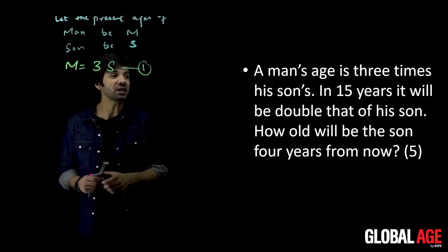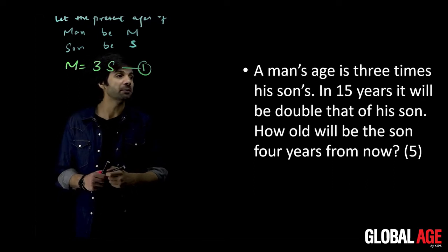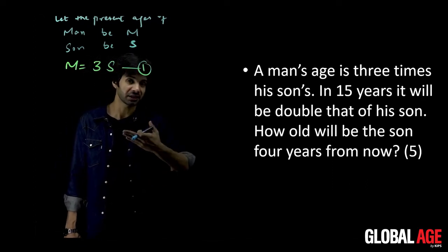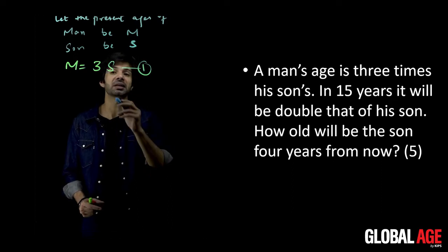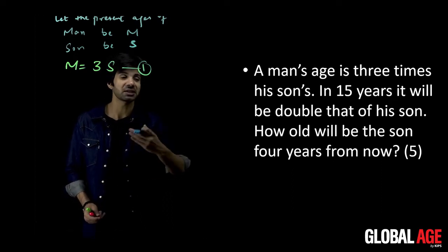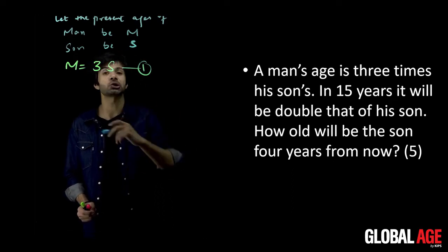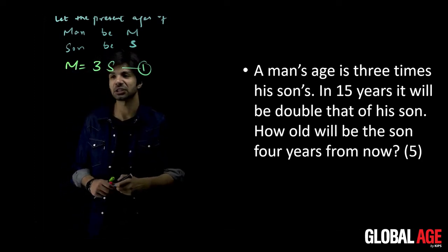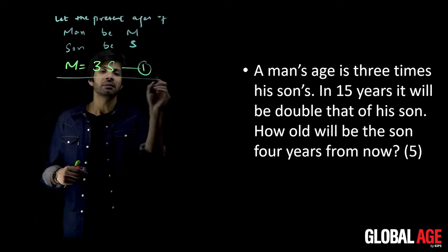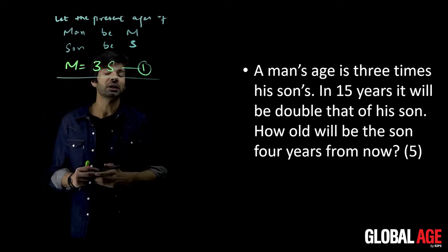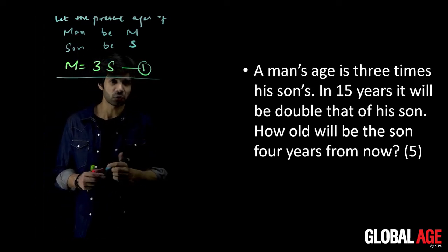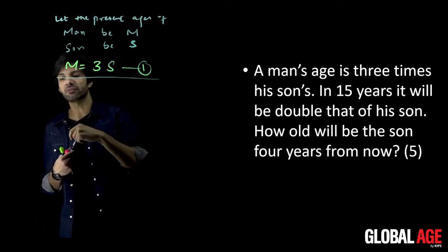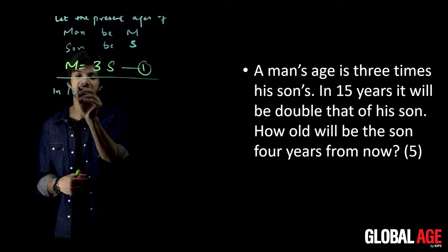Now in 15 years, it will be double that of his son. You know age ratio is reduced by time. If a person is three times - if the present age of man is M, then in 15 years, man's age will be reduced by his son's age. What is three? This is M over S, the ratio of man's age and son's age. Now, if it is written in 15 years, just tell me in 15 years.